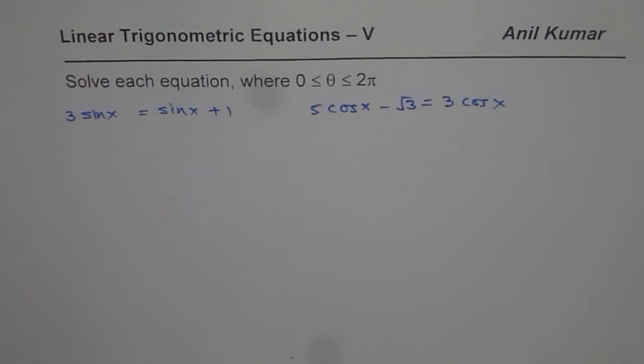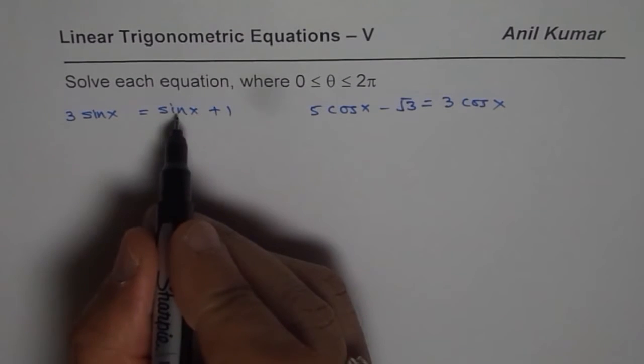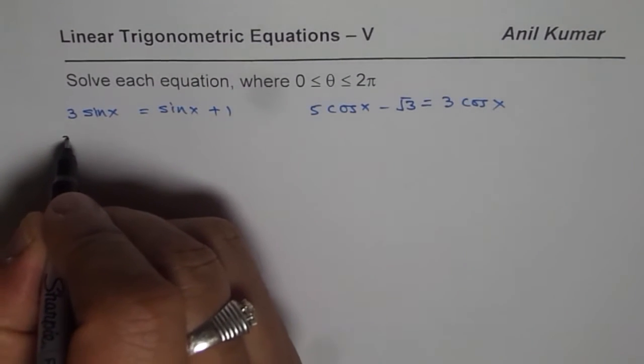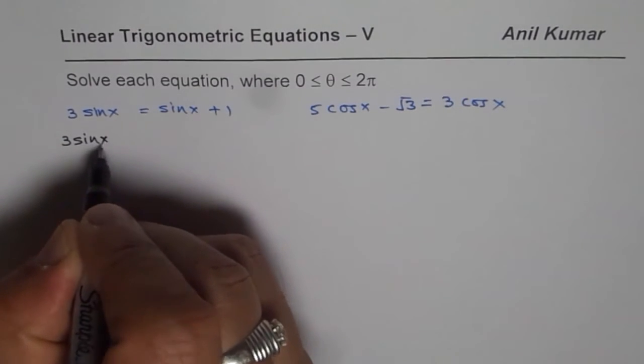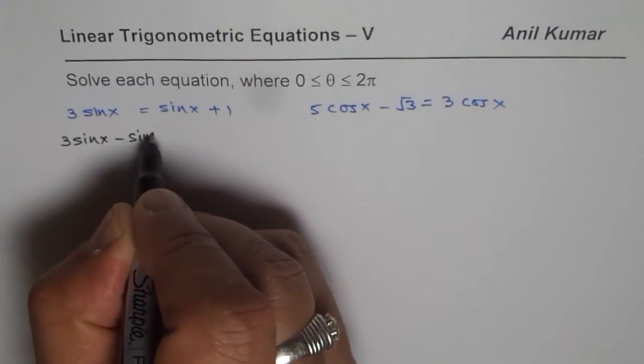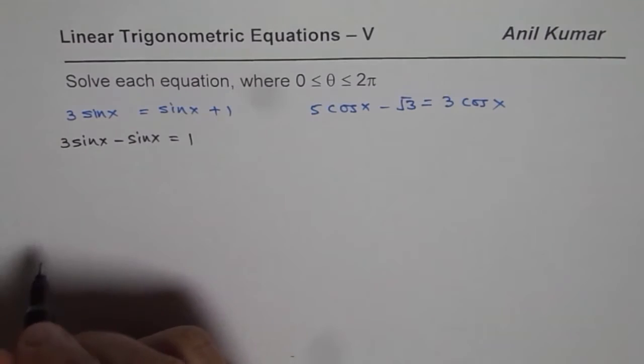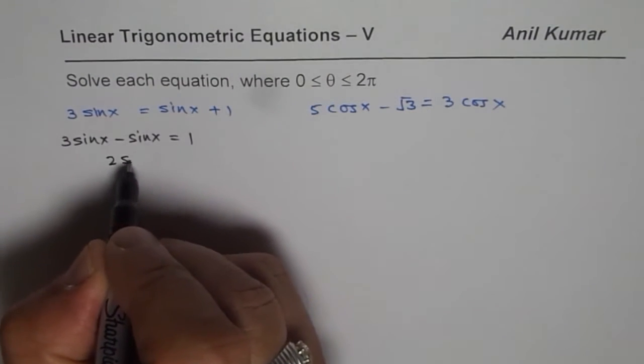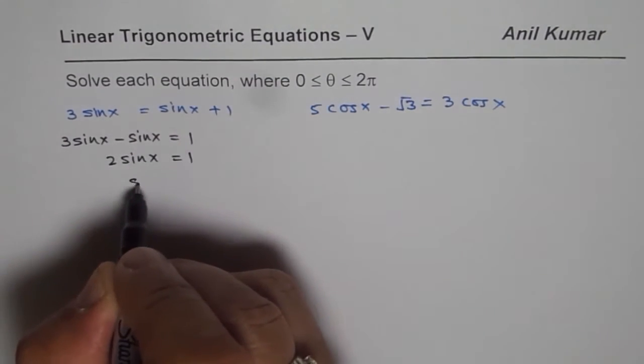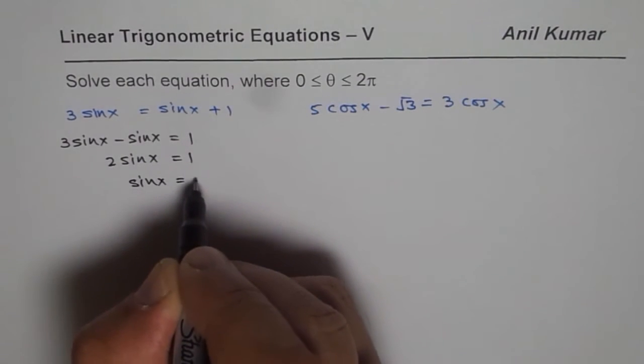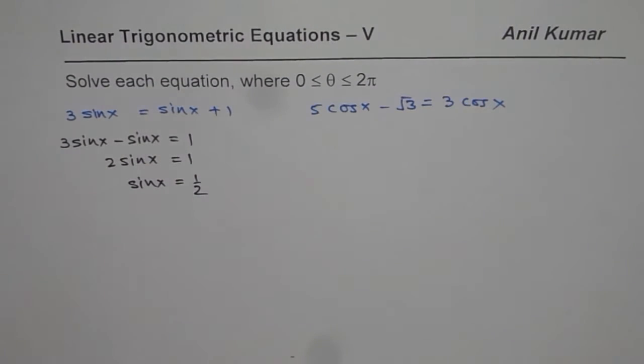So the first equation is 3sin(x) equals to sin(x) plus 1. We can bring sin(x) to the left side. So we get 3sin(x) minus sin(x) equals to 1. That gives us 2sin(x) equals to 1 or sin(x) equals to half.